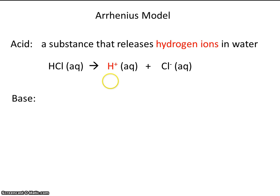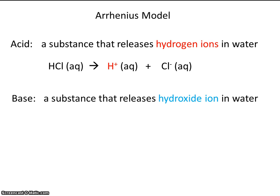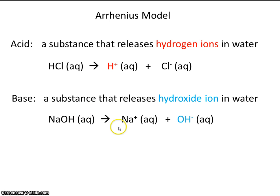Arrhenius defined a base as a substance that releases hydroxide ions in water. A classic example of a base is sodium hydroxide. This usually exists as a solid — it's a white powder — and when you dissolve it in water to make it aqueous, it will release hydroxide ions. So anytime you see hydrogen ion, associate that with an acid; anytime you see a hydroxide ion, think of a base.